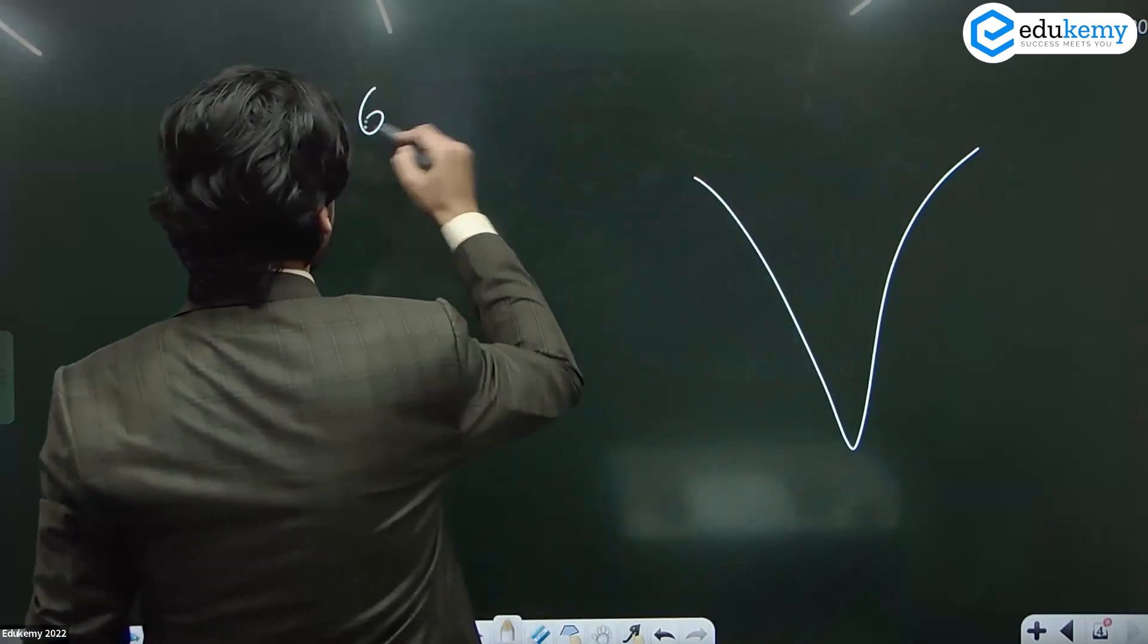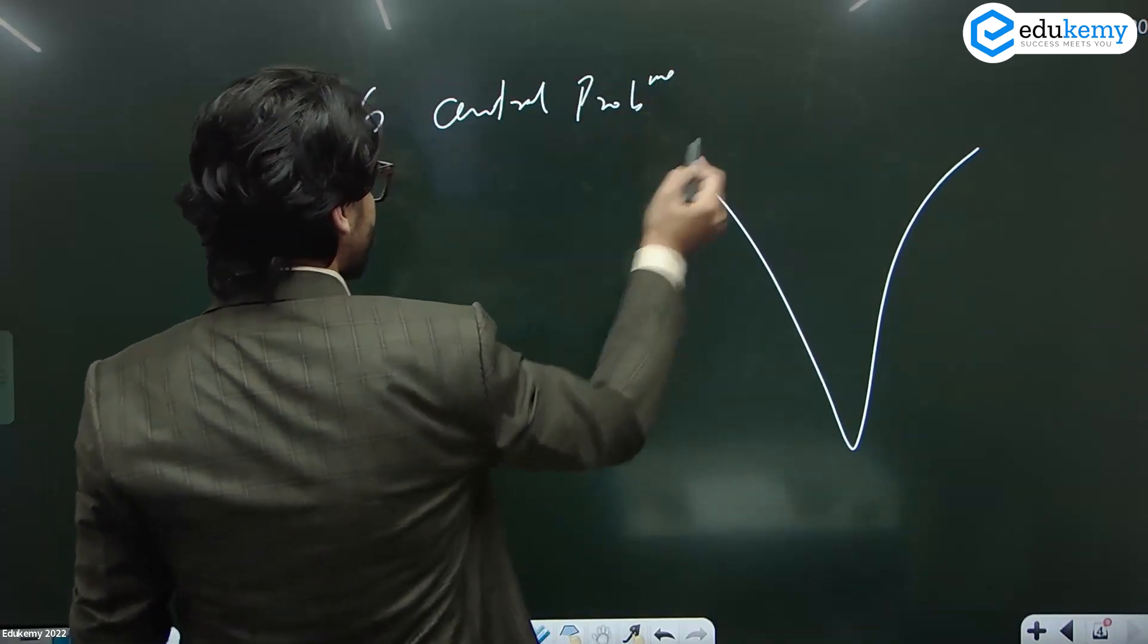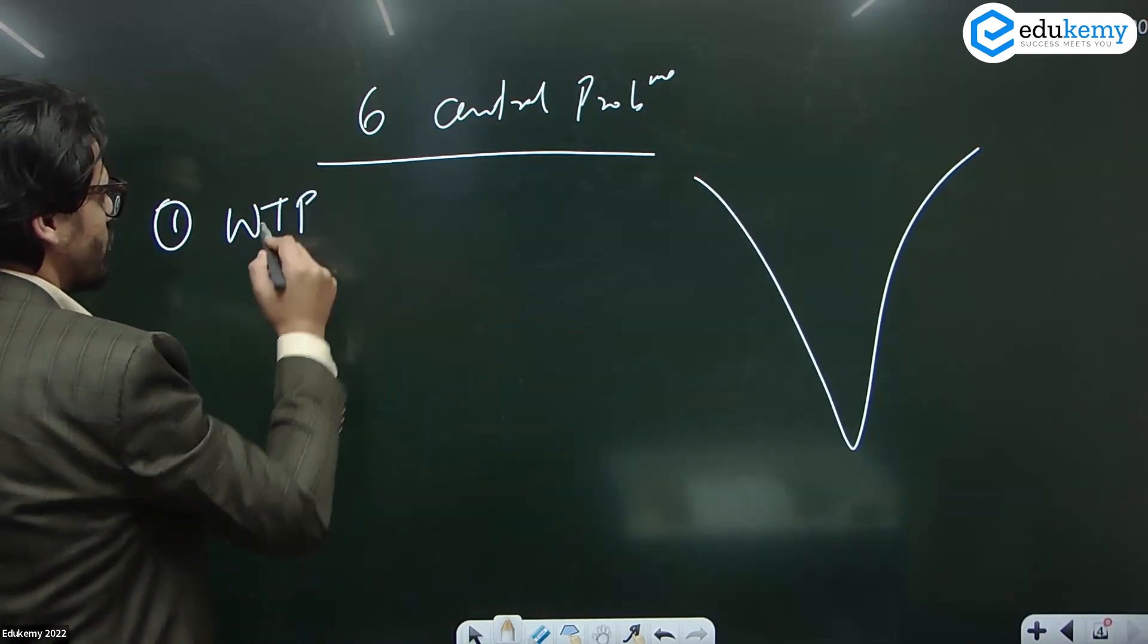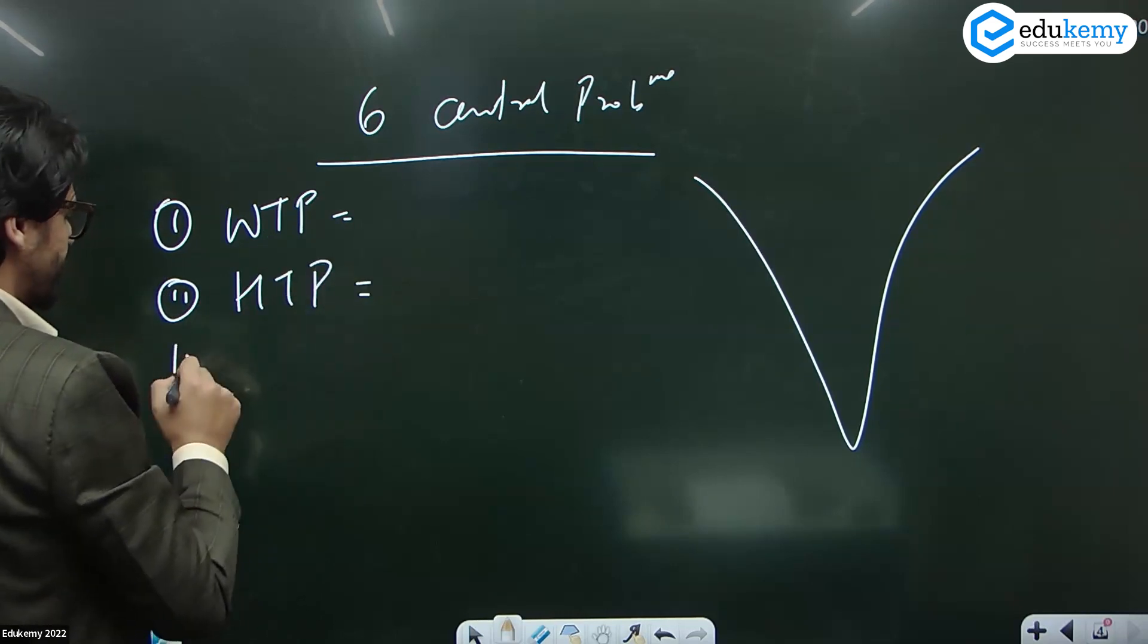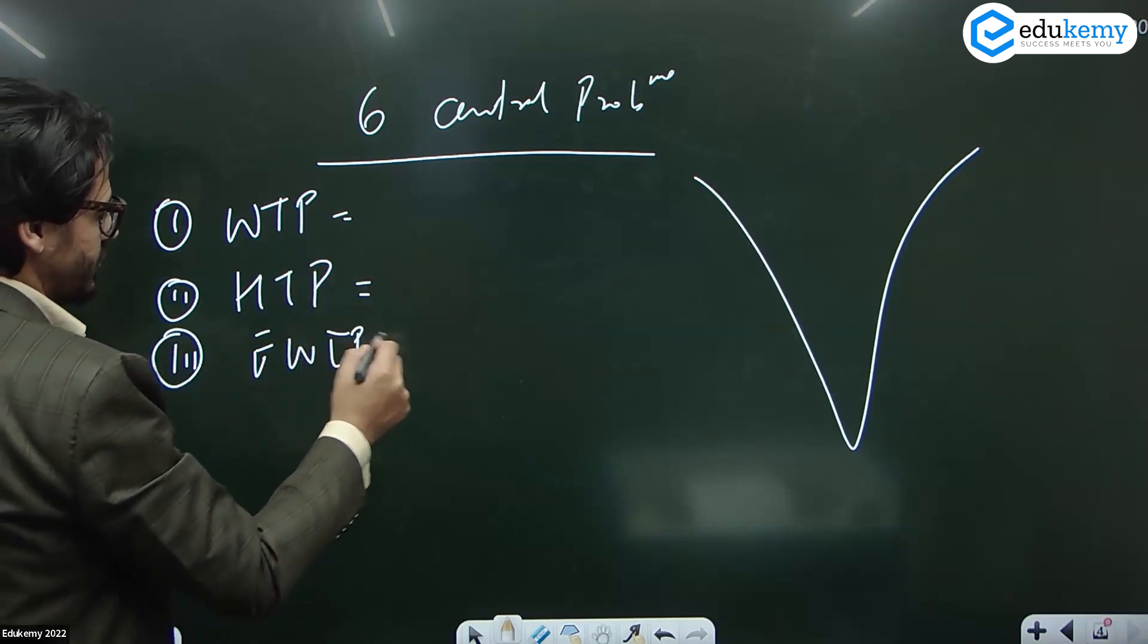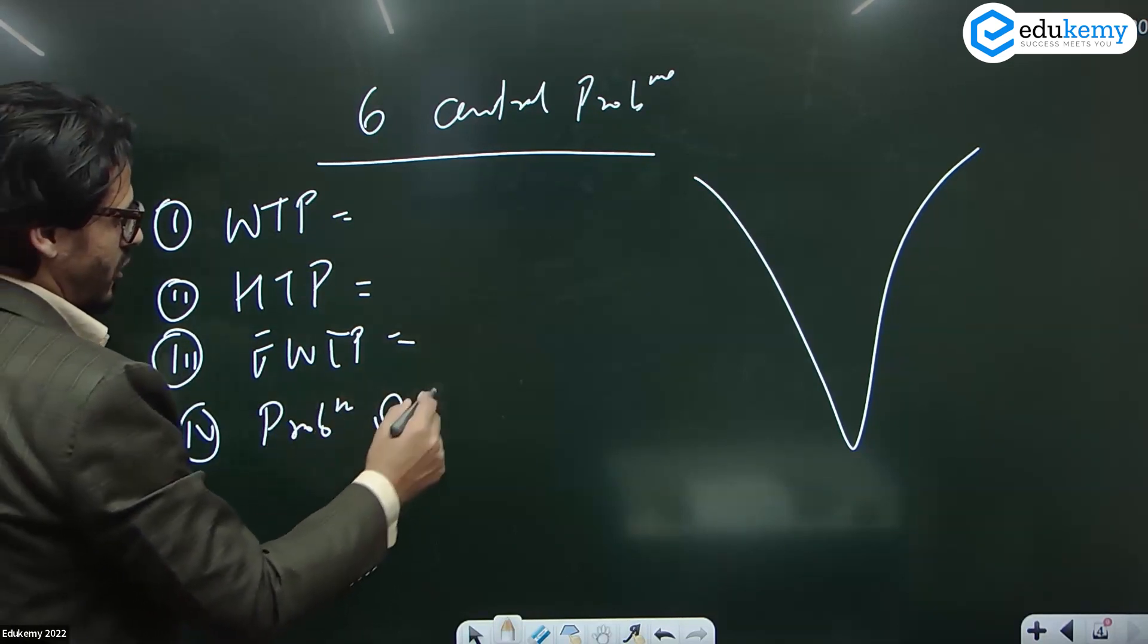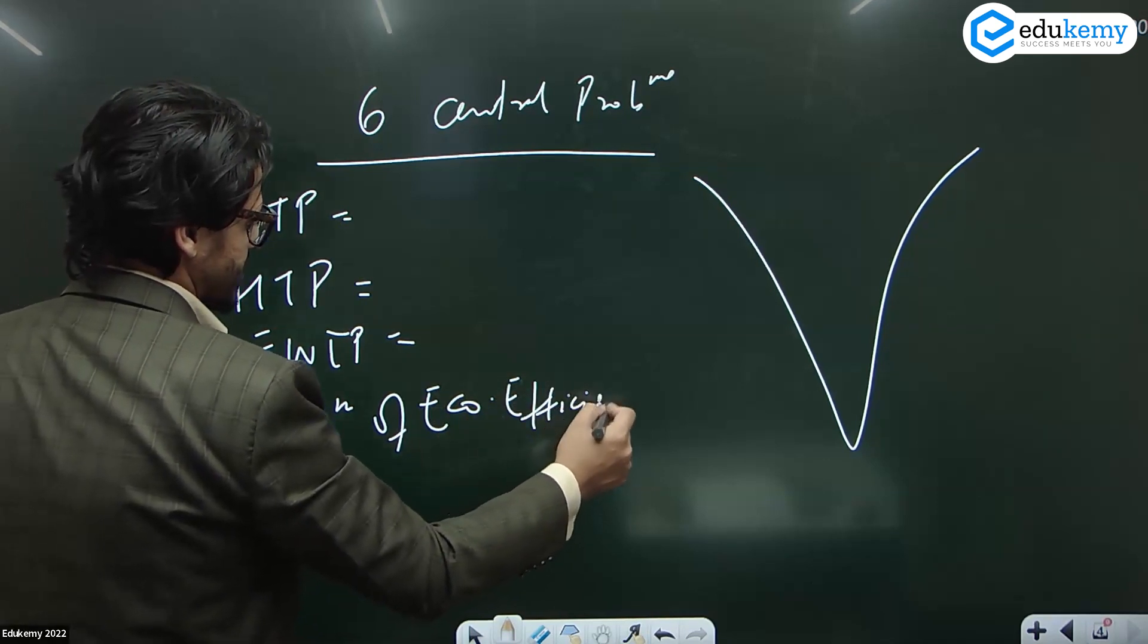In an economy we have six central problems. Number one is what to produce, number two is how to produce, number three is for whom to produce, number four is problem of economic efficiency.